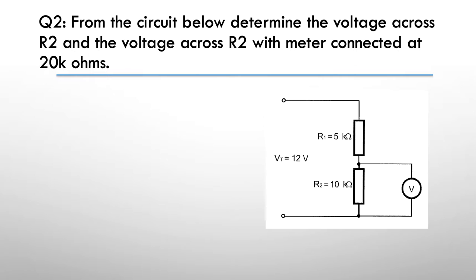The first one is get the voltage across R2 without the voltmeter, and the second one with the voltmeter. We've got a total voltage of 12 volts, R1 is 5k, and R2 is 10k ohms. There's a couple of ways you could find the voltage. Pause here.